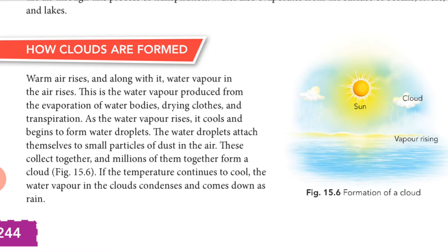During summer, temperature increases, so the temperature of the water surface increases. Water droplets start to evaporate and slowly the water converts into water vapor, which rises up. When water vapor reaches a certain height, it cools down because at high altitude there is less temperature, and it starts to convert back into water droplets.